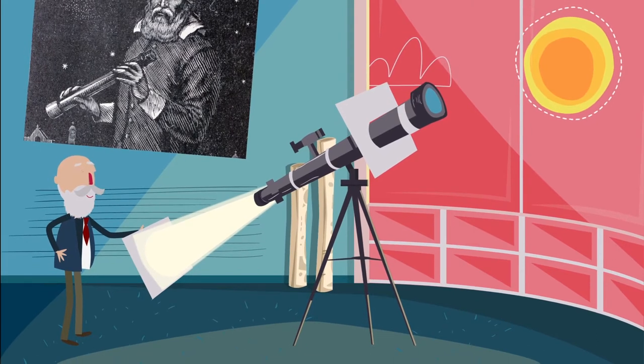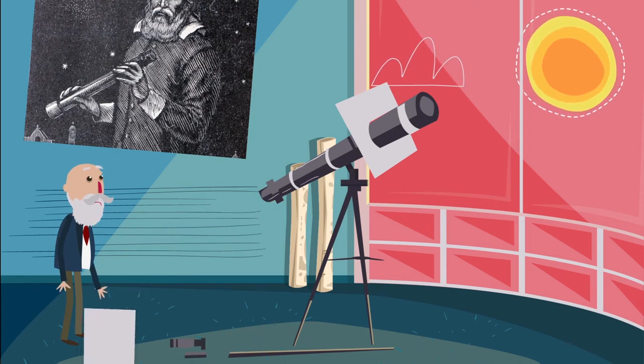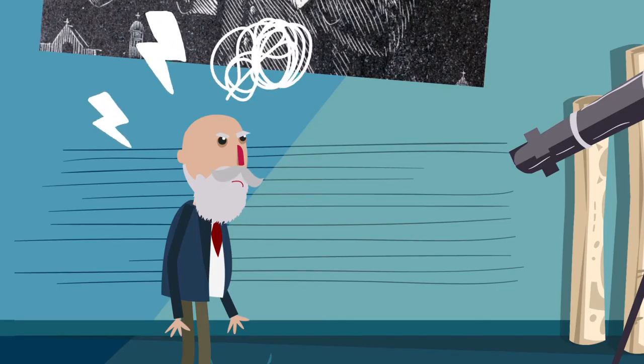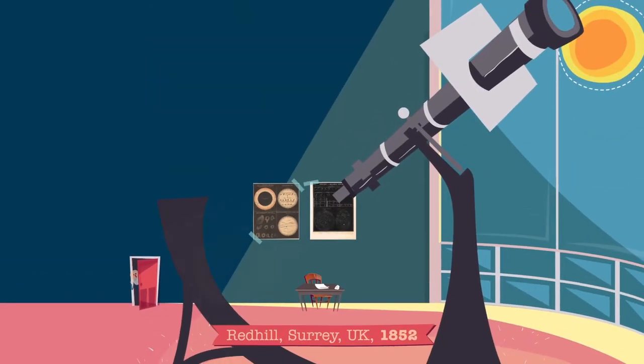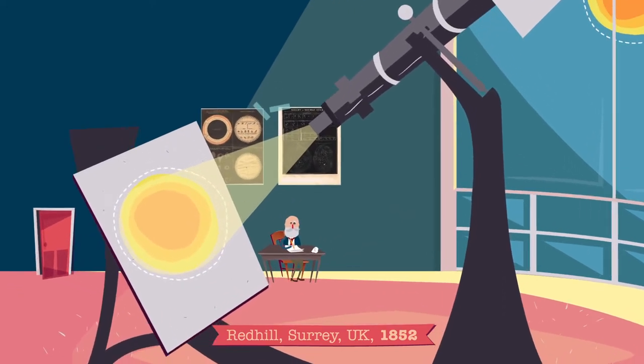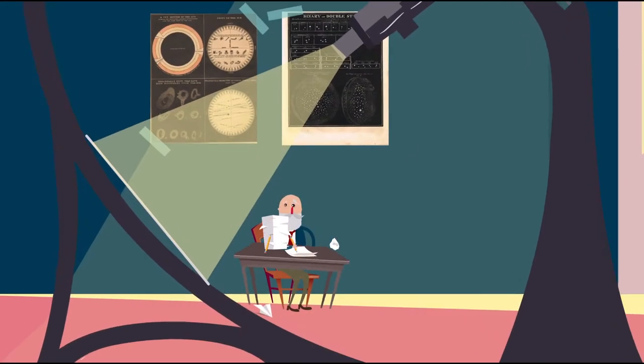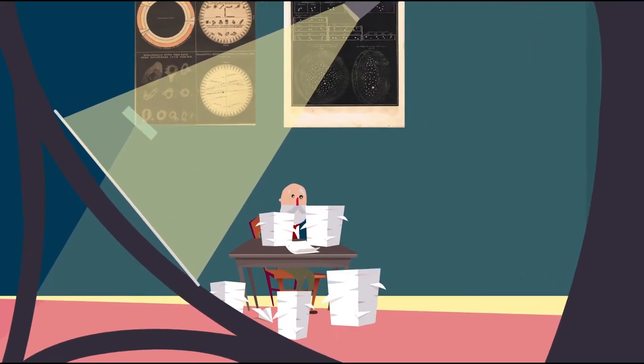Desde donde hizo numerosas observaciones. Tras quejarse varias veces por lo viejos que eran sus instrumentos, decidió dimitir y fabricar su propio telescopio. Con ese telescopio, durante siete años y medio, Carrington acumuló más de 5,000 observaciones de manchas solares.